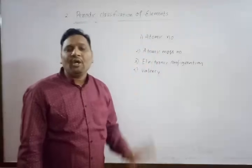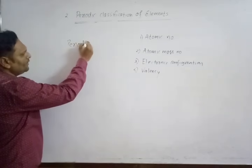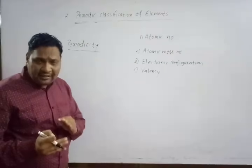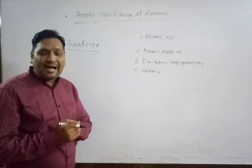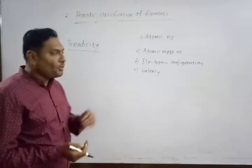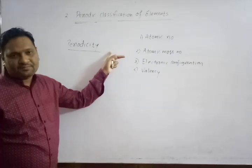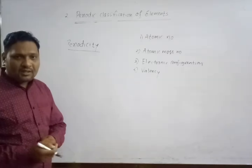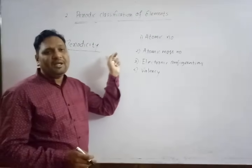Before learning this, you have to know what is the meaning of periodic classification of elements. The word periodic comes from periodicity. Periodicity means when the elements are arranged in the increasing order of their atomic number, after an interval they show similar properties. Their properties repeat after interval, and that is why it is known as periodicity of the properties.